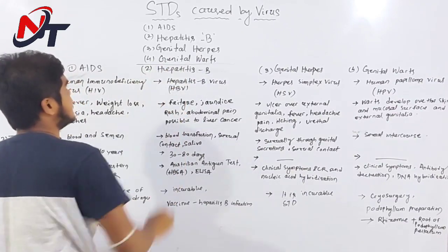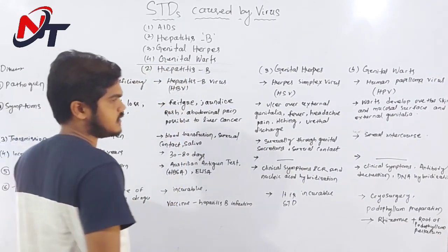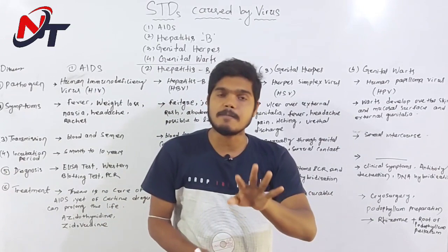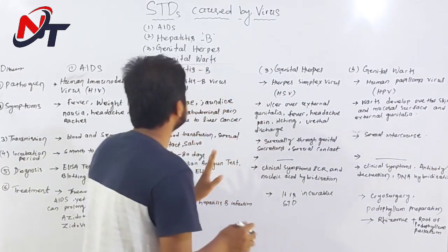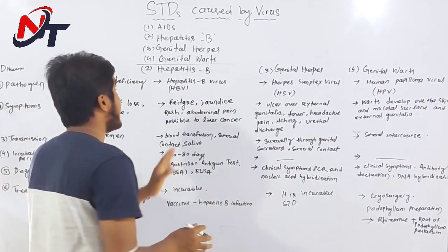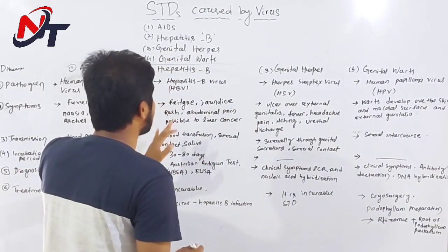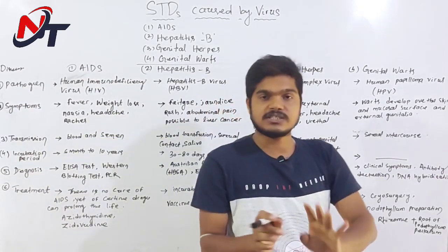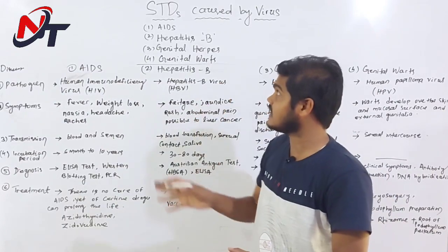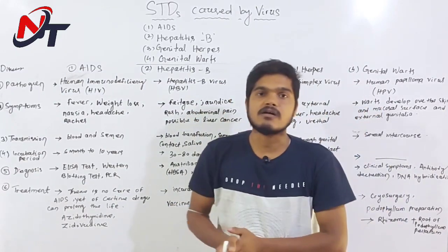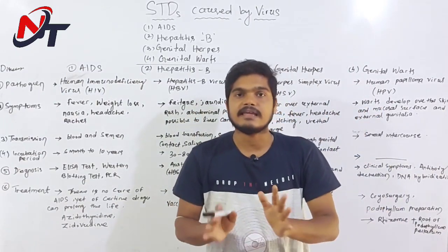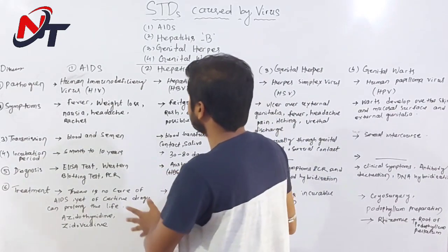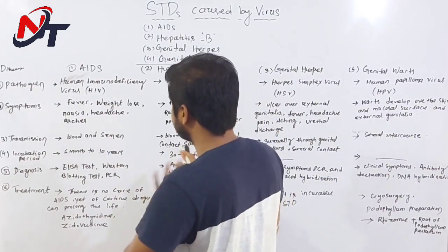The first one is AIDS, the second one is hepatitis B, and the third is genital warts. What are genital warts? Hepatitis B and AIDS — who is non-curable or incurable? Who has no cure? We can see the STDs caused by virus.